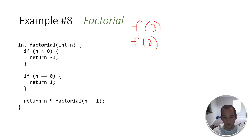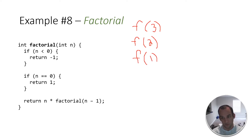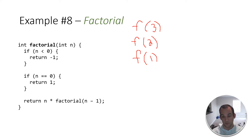Let's go through the algorithm again. Two is not less than zero, two is not equal to zero, so we get down to the return statement: return n times factorial of n minus one. So two times factorial of two minus one — we're going to call factorial of one. Then we go through it again: one is not less than zero, one does not equal zero. Return one times factorial of one minus one, which is zero — so we call factorial of zero.